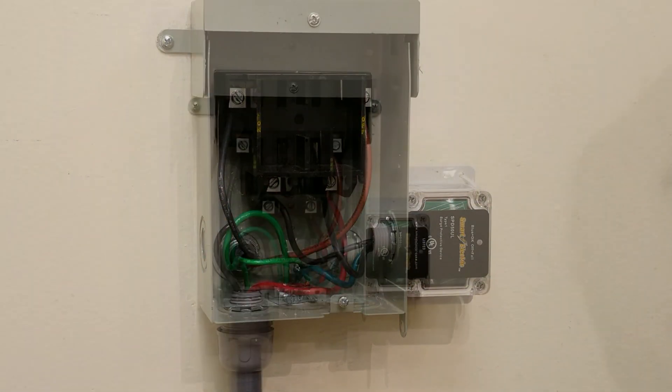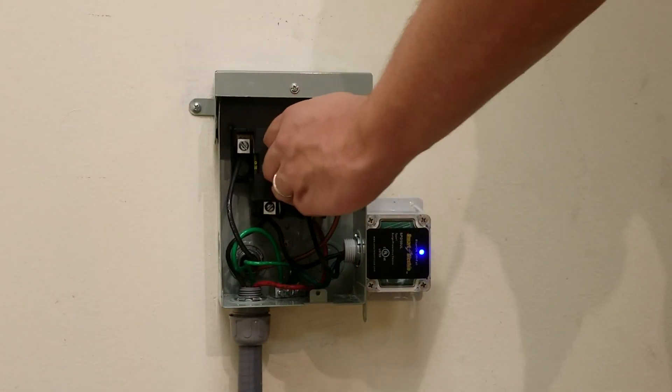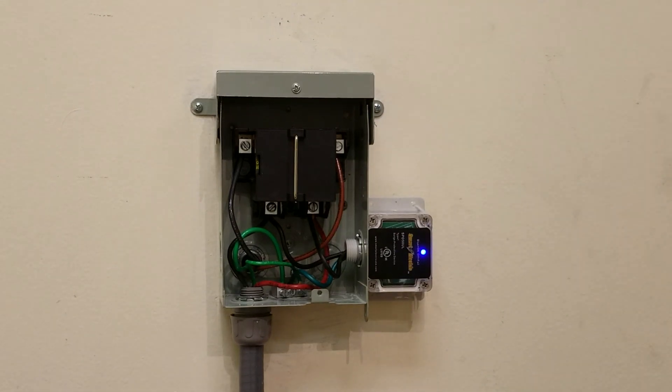After rechecking the connections, turn the main power supply breaker back on and reinstall the disconnect fuse plate to the service panel.